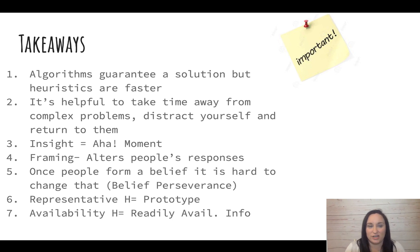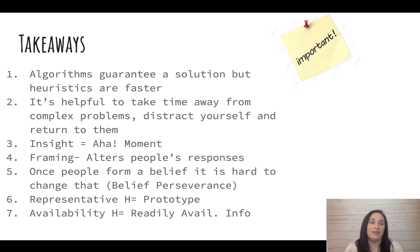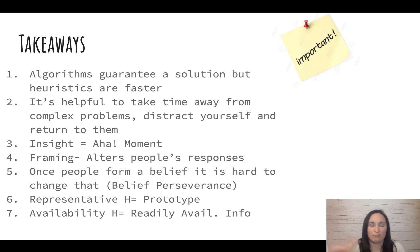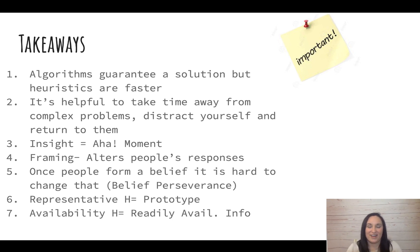Takeaways: Algorithms guarantee a solution but take longer than heuristics. It's helpful to take time away from complex problems - distract yourself and then return. Insight is that 'aha' moment. Framing alters people's responses. Once people form a belief, it's hard to change their mind - that's belief perseverance. Representative heuristics - think 'prototype.' Availability heuristics - think readily available or most recent information. That sums up Module 35.